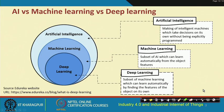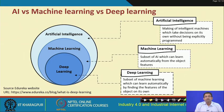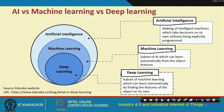First we are going to start with understanding how machine learning compares with deep learning, which is also very popular nowadays. So how machine learning compares with deep learning, and how machine learning and deep learning together compare with artificial intelligence. This is the overall comparison: AI versus machine learning versus deep learning. Deep learning can be thought of as a subset of machine learning, and machine learning itself is a subset of artificial intelligence.